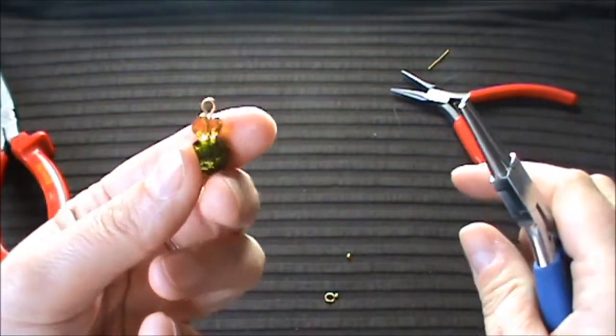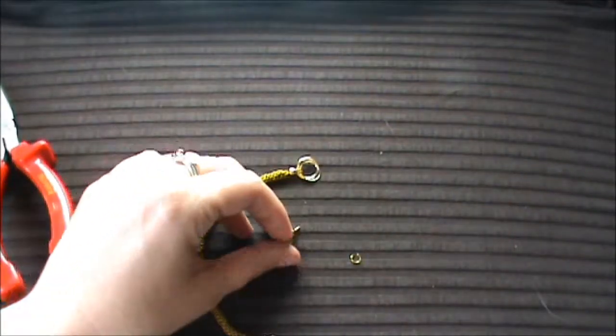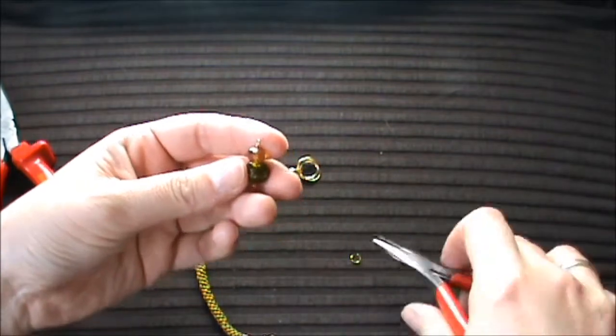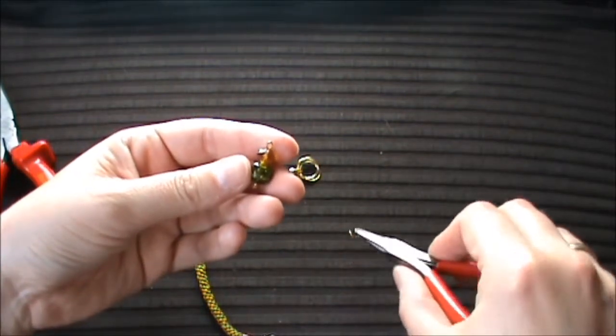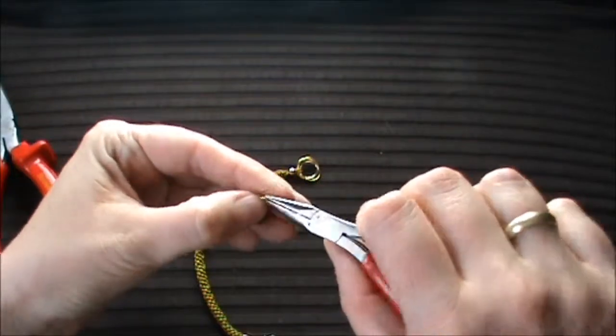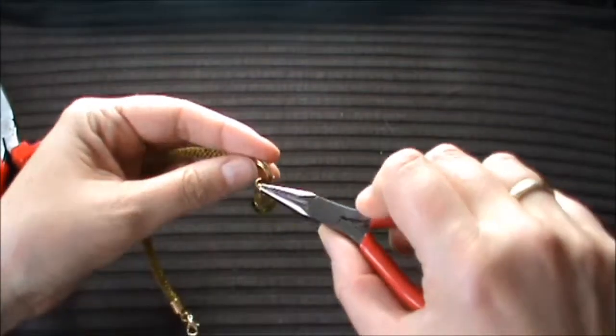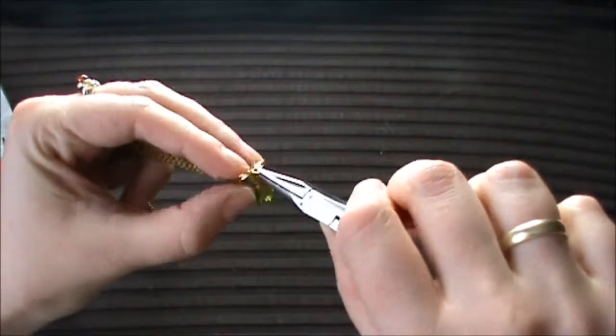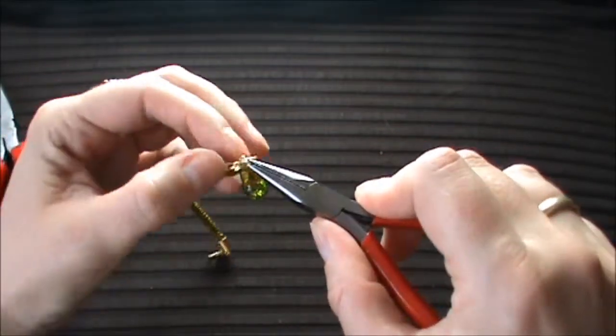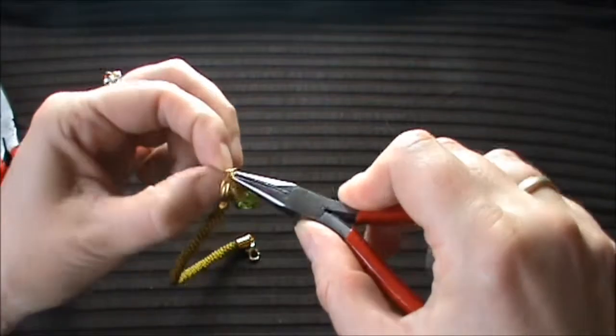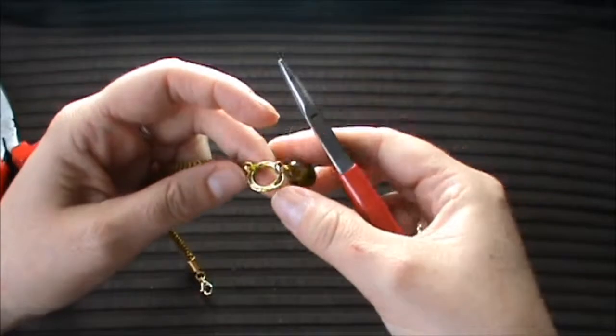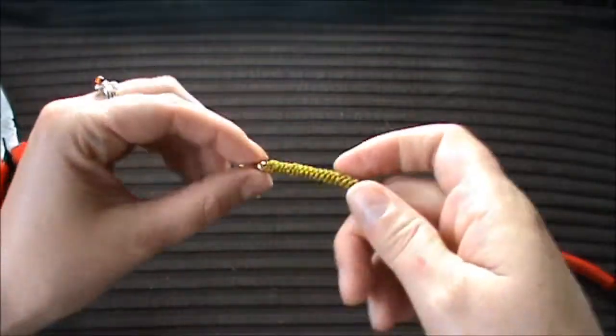Now it's time to finish our bracelet. To do so we take the charm we made earlier, attach it to a 5mm jump ring, and attach the jump ring to the loop element of the bracelet. Close the jump ring gently and as usual try not to distort the shape of the jump ring.